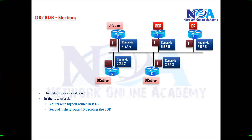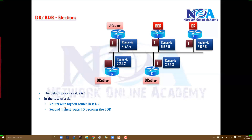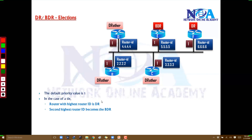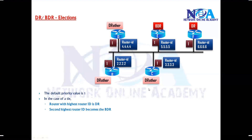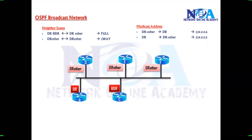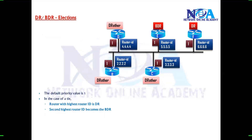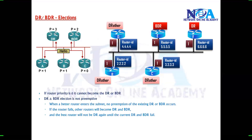So this is how DR/BDR elections are done — based on the priority value, and if there is a tie in the priority value, it will automatically decide based on the router IDs. We can change the priority values; we'll see that in the configuration section in more detail. Assuming we go with the default values, the router ID will be the tiebreaker.